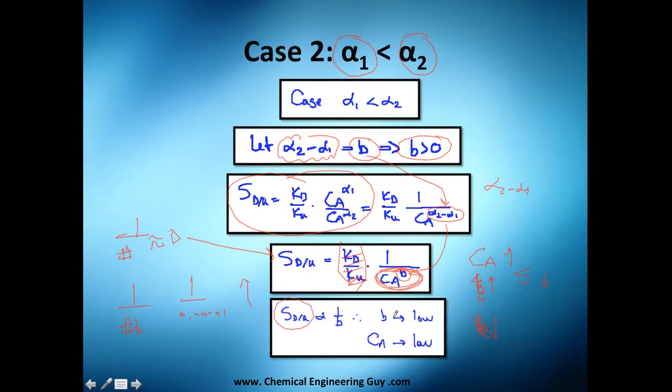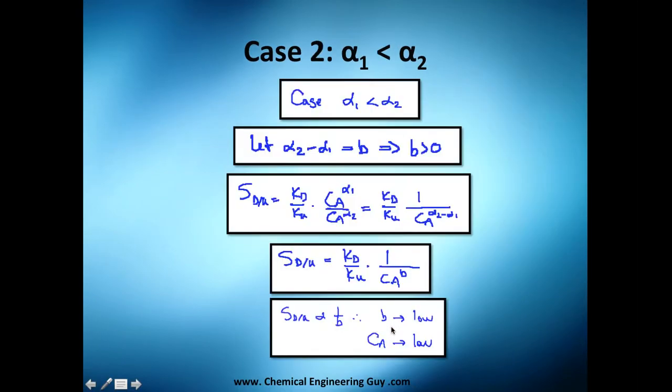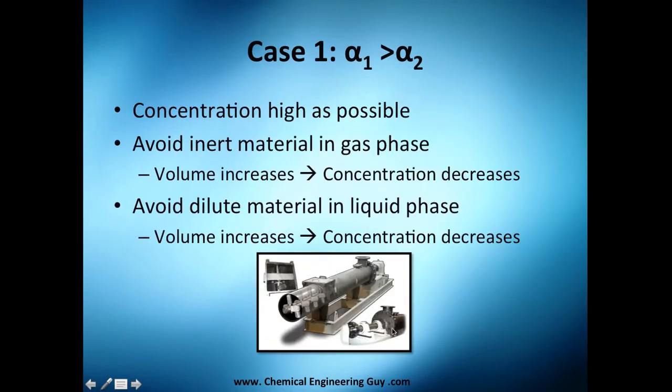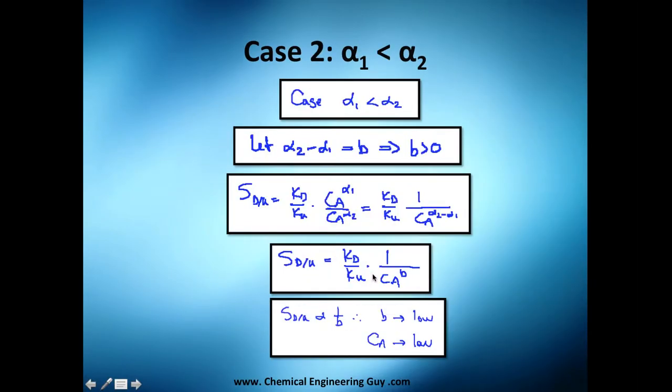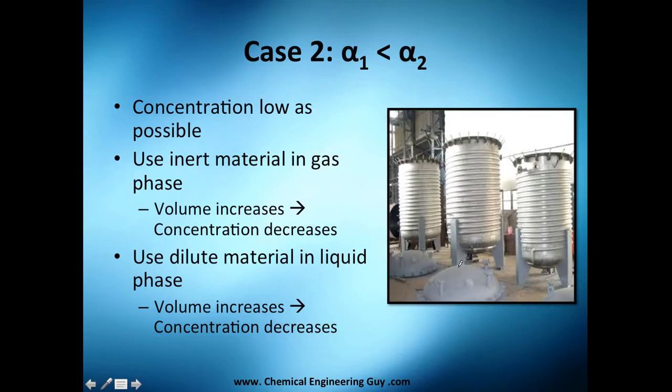So once again, let me show you. Here we wanted to increase concentration of A, but in this case it's down, so we want to decrease concentration of A. How do we do that? How do we make concentration as low as possible?